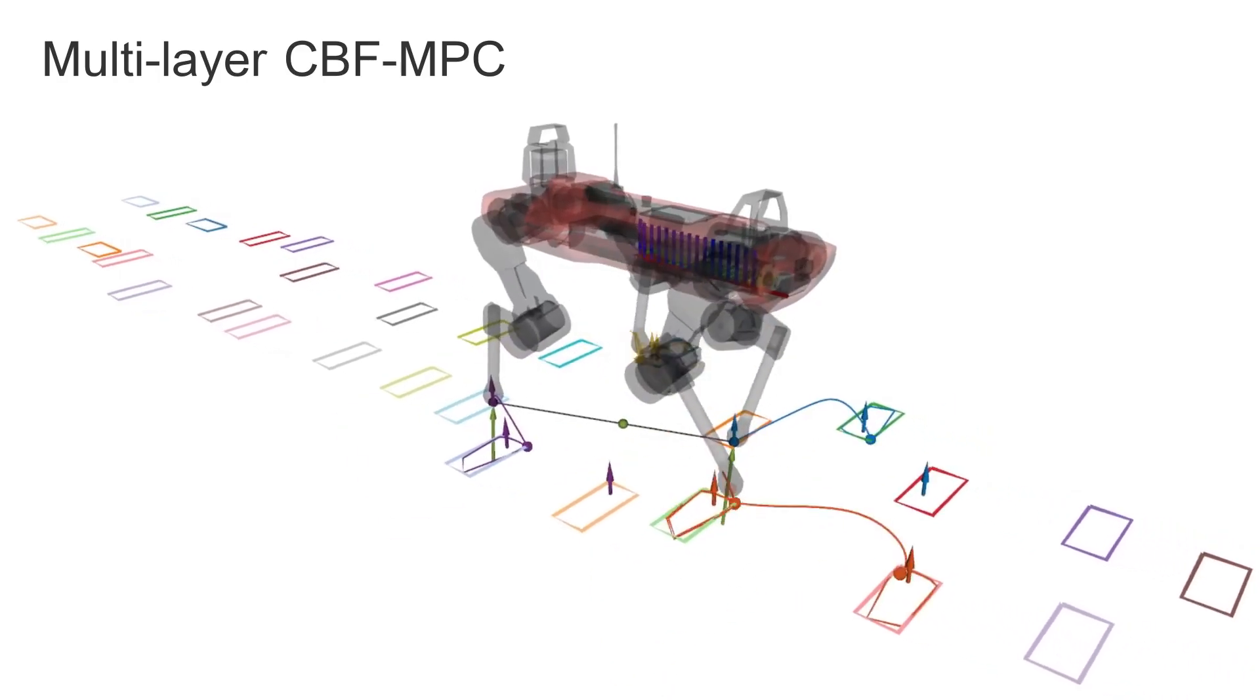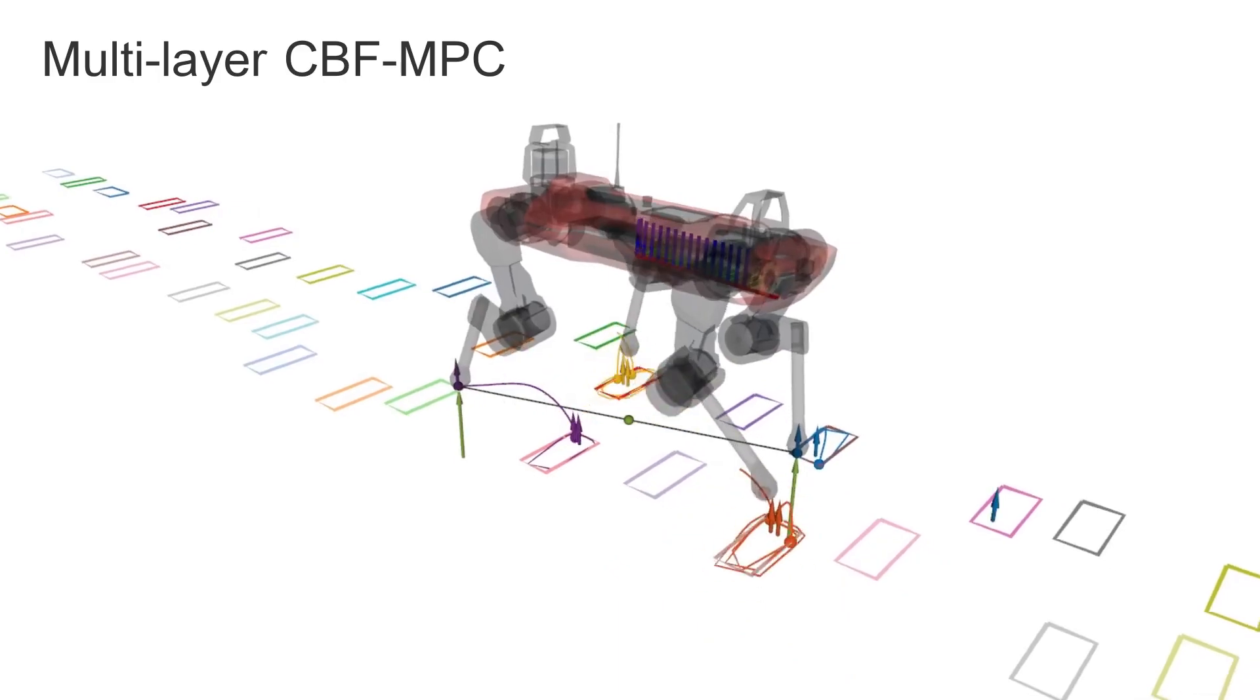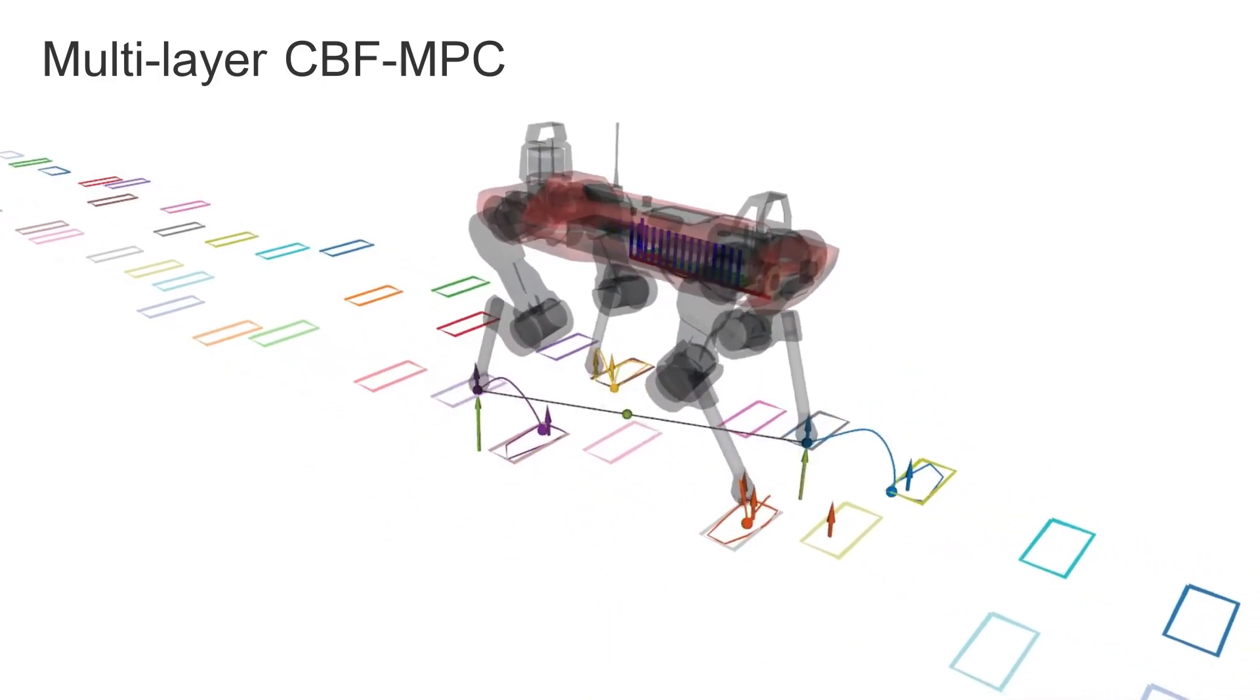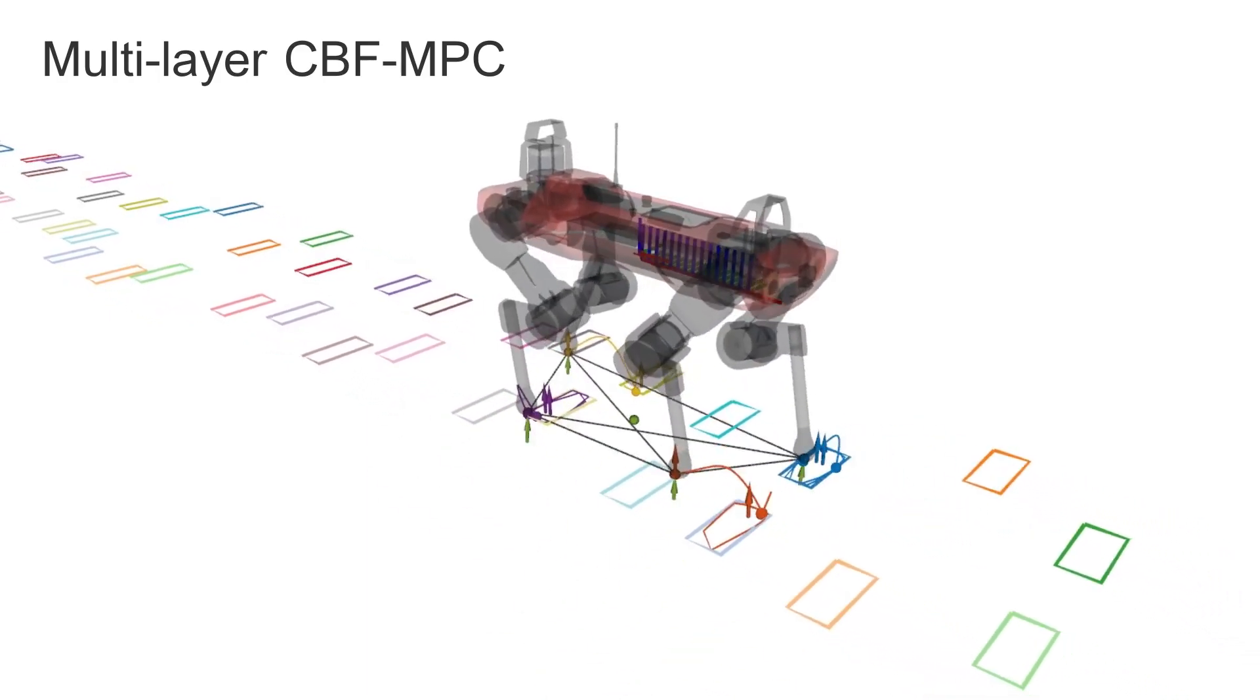We visualize here again the continuously optimized trajectories from the MPC layer, the optimized contact forces shown by the green arrows, and the shrinking barrier constraints, which are active when a foot is in swing phase.